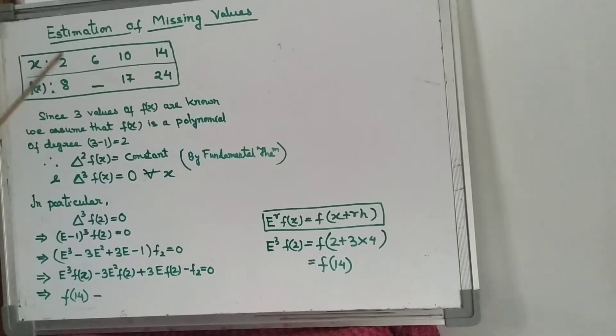These are argument values because the interval between the x values are equal, so these are equidistant values. These are the corresponding entry values. Here one entry value is missing, so we have to evaluate this entry's value with the help of this table.